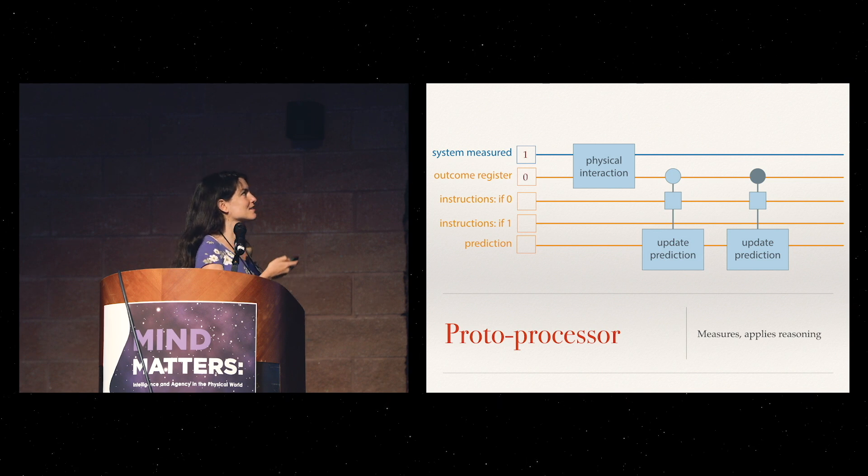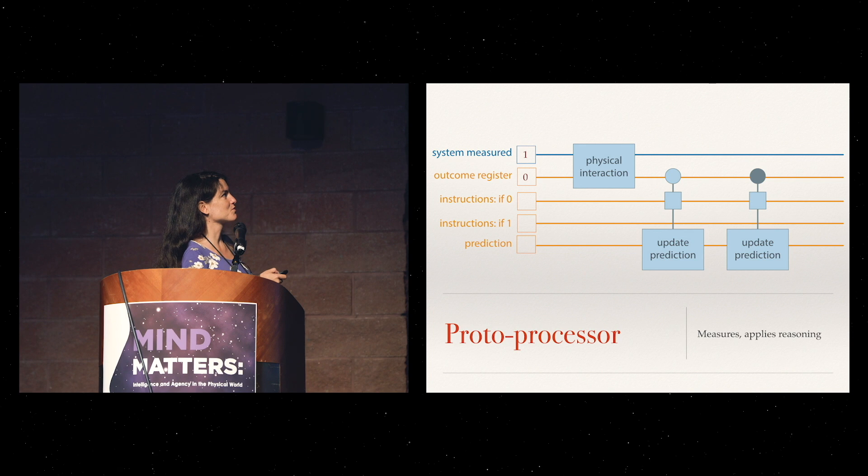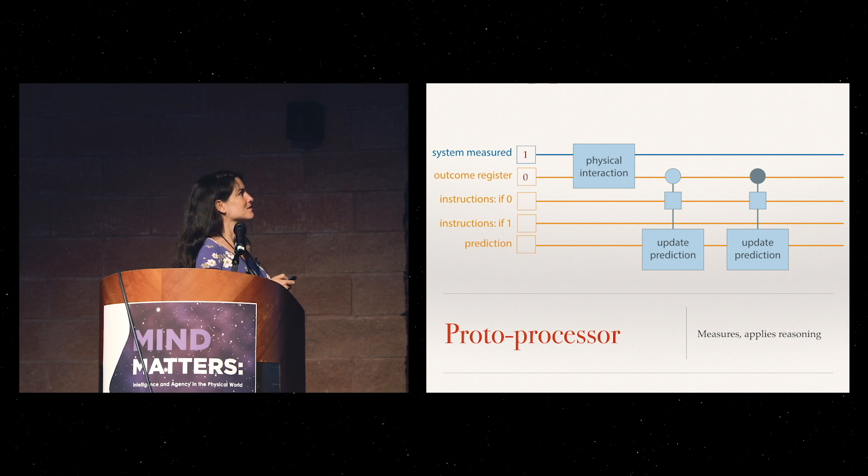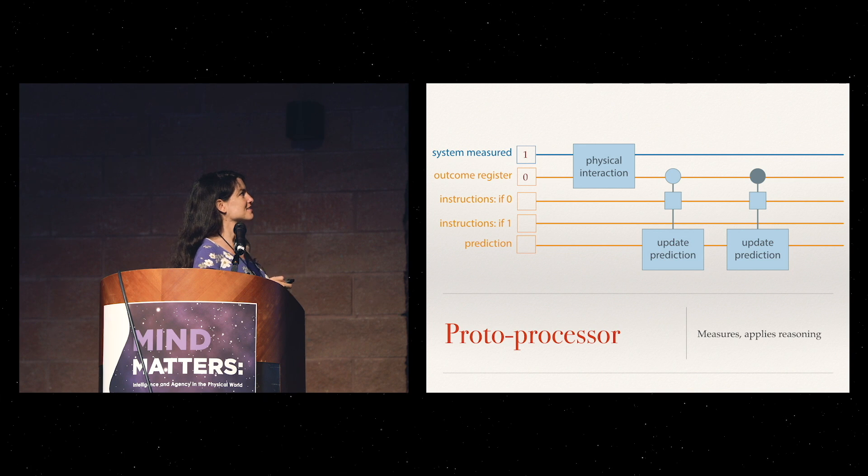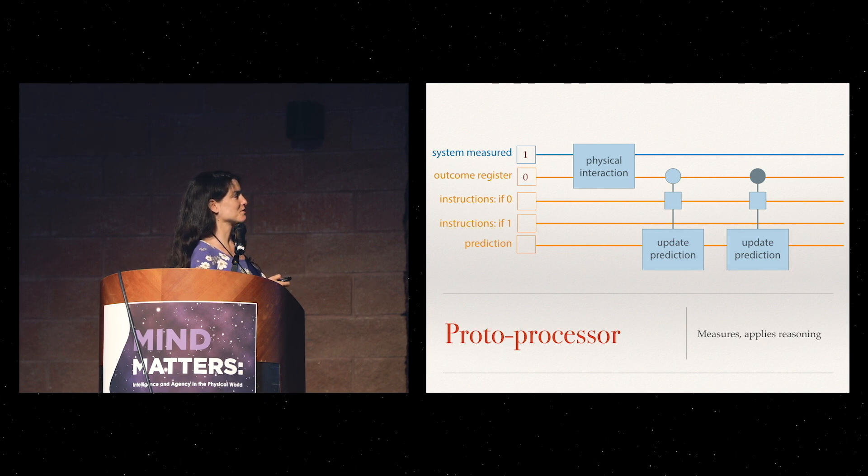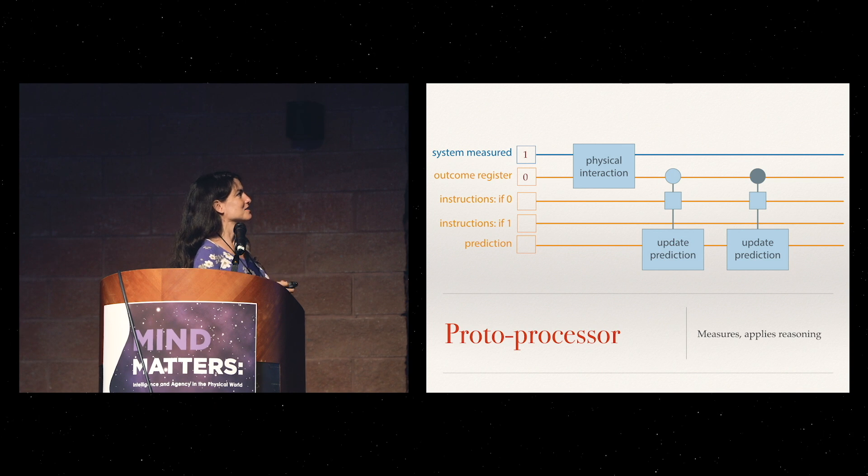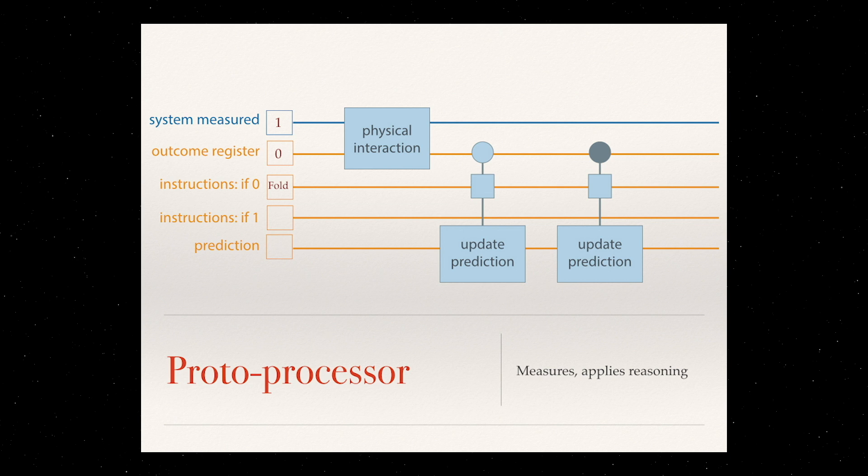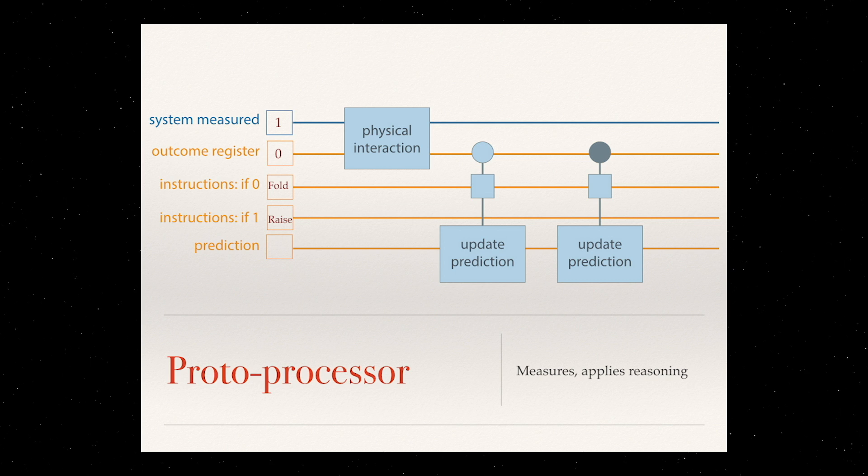Suppose what you're doing is just looking at a card that can be a zero or one. Your register for now doesn't say anything. You have some instructions - if you see a zero, because you're playing a very simple game, you want to later fold. You want to create an instruction here for the prediction that says fold. If you see a one, you want to raise. For now, your prediction doesn't say anything.